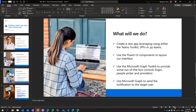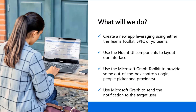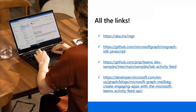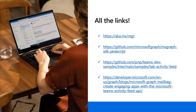A couple of links you might want to look into: the Microsoft Graph JavaScript SDK, the PnP sample that you can use and start building with, and finally the blog post I shared earlier to get you running and able to start playing around with this Activity Feed API. Over to you, Vesa.